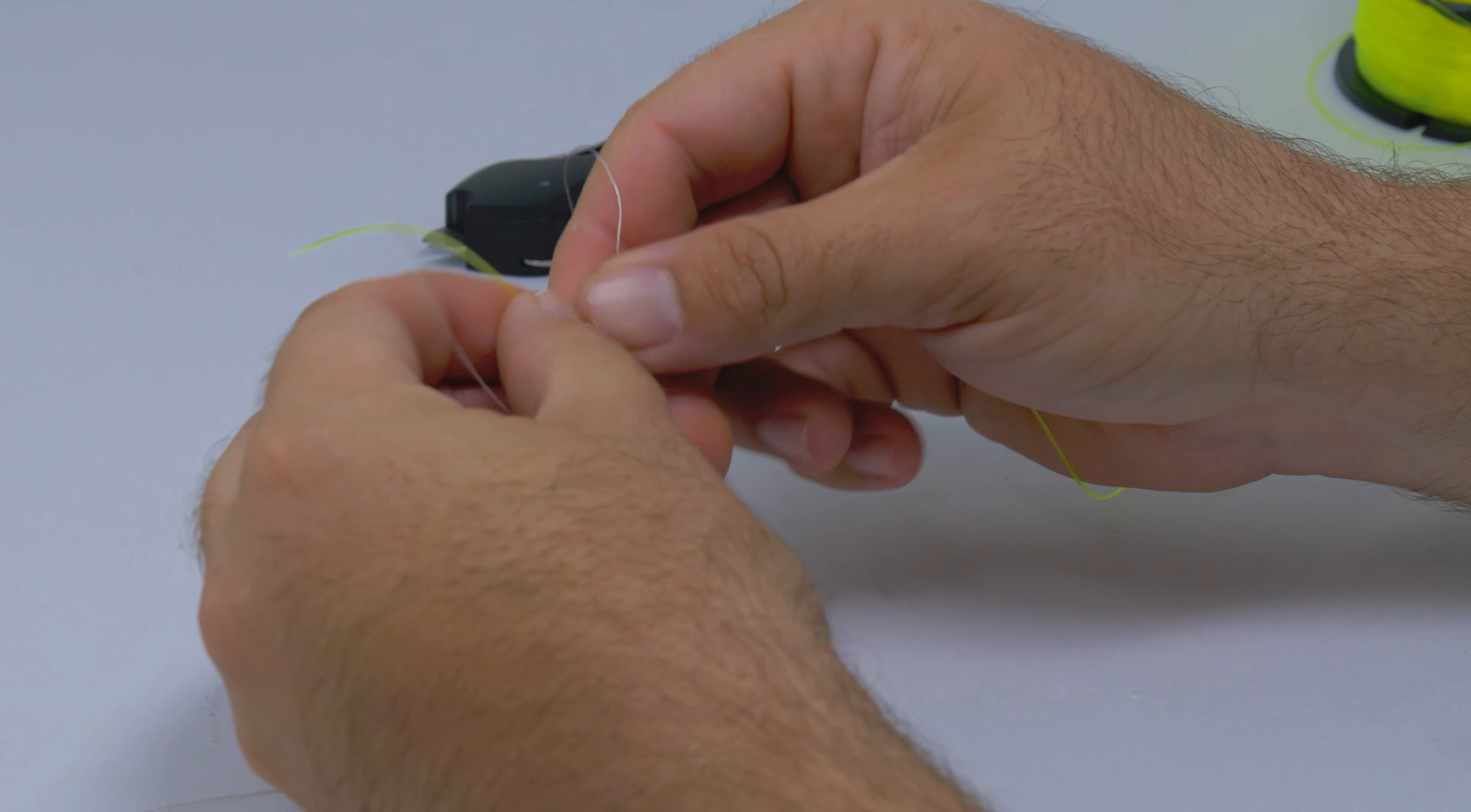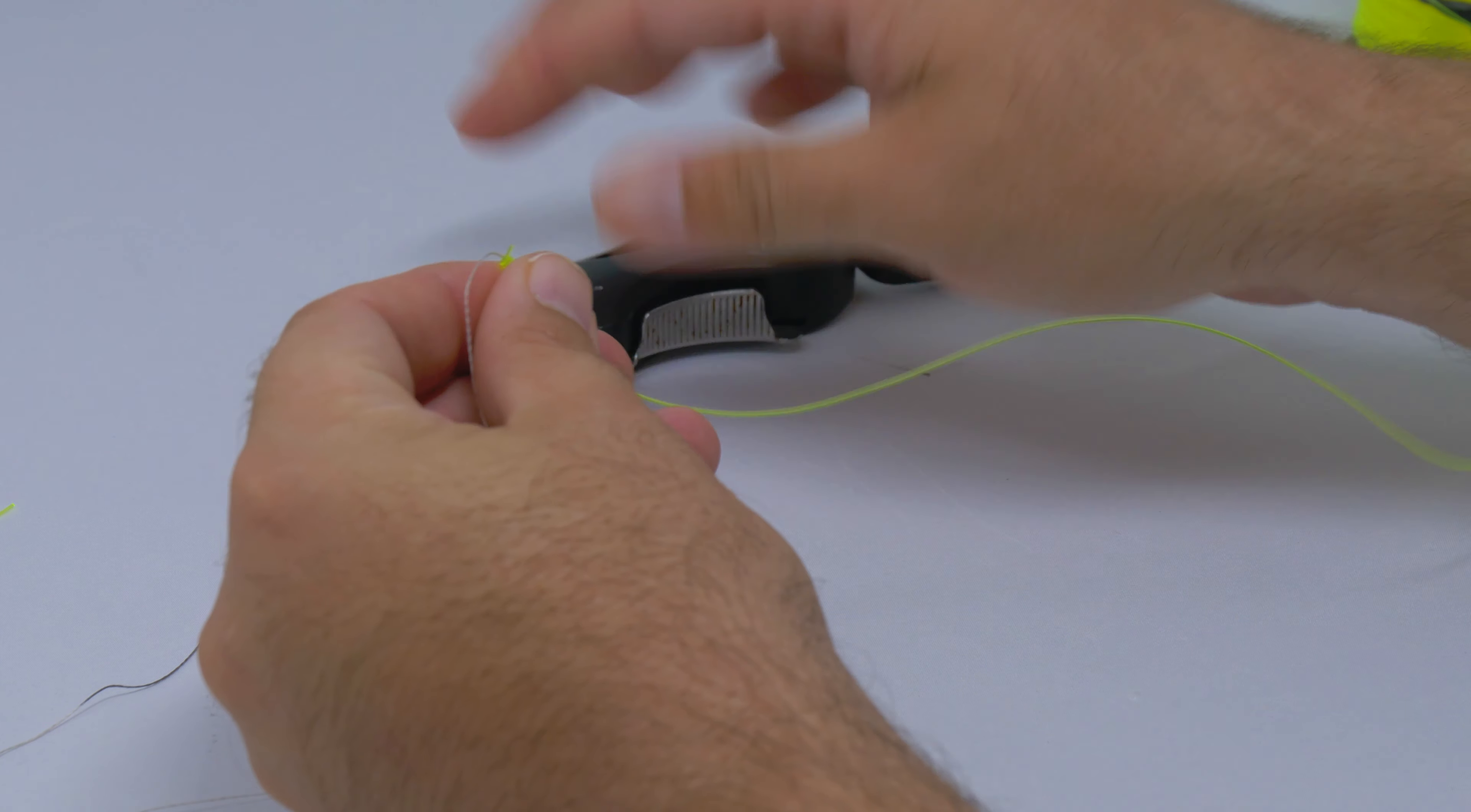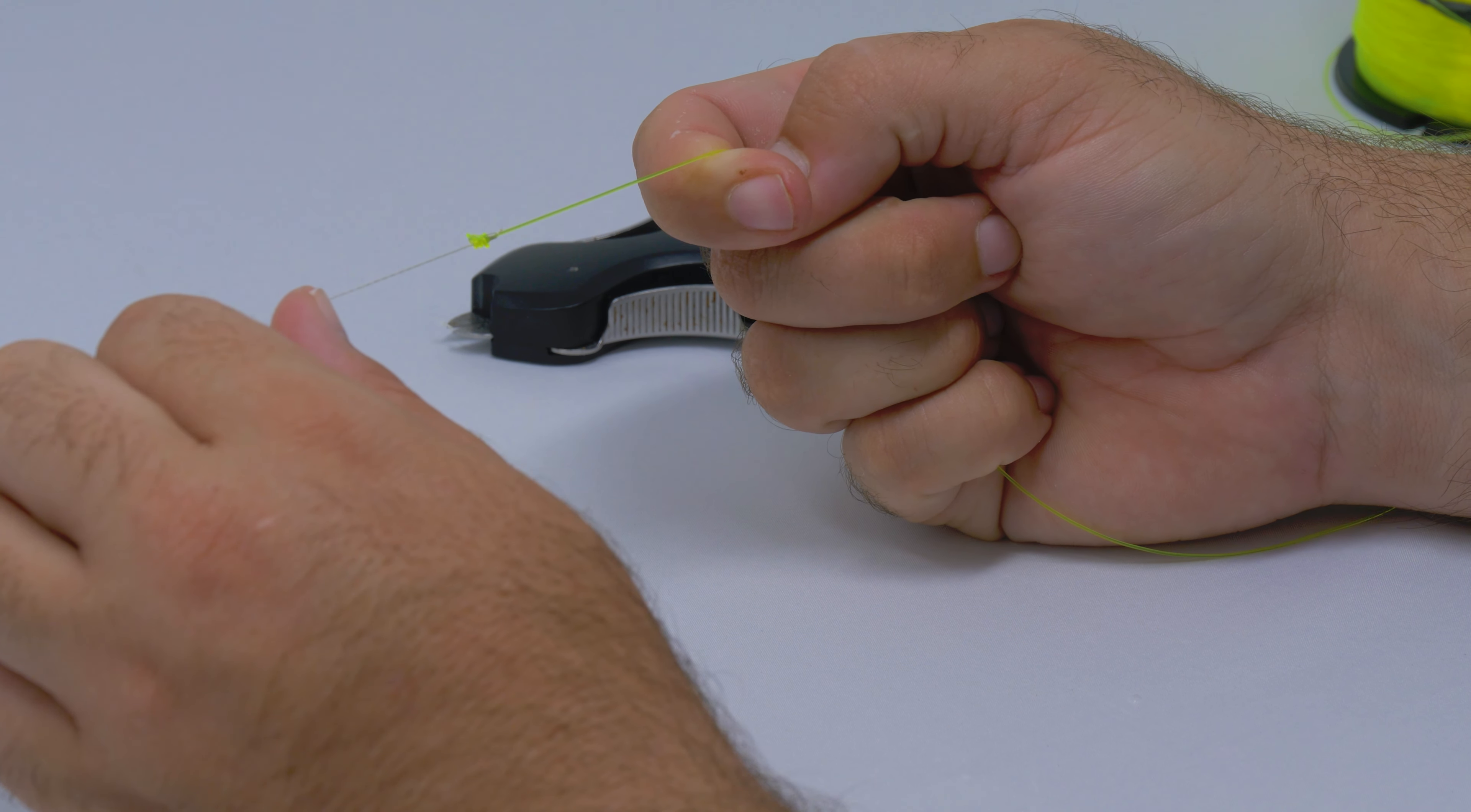Now all you got to do is take your cutters—these little boomerang cutters are perfect for cutting braid. Go ahead and trim both your tags on your braid and your monofilament or fluorocarbon. And it's as simple as one, two, three. This knot has a 90 percent break strength, so it's very strong.